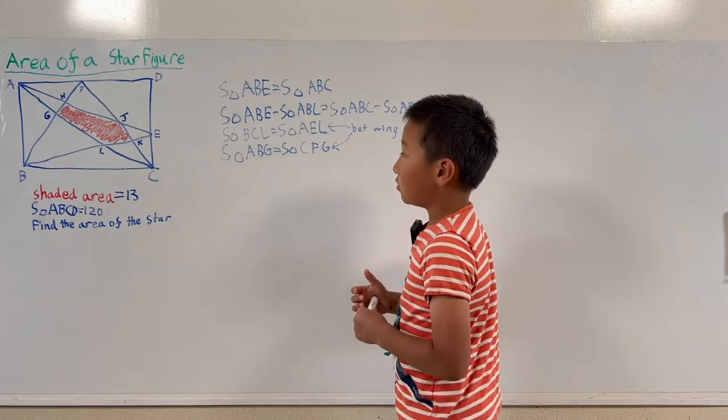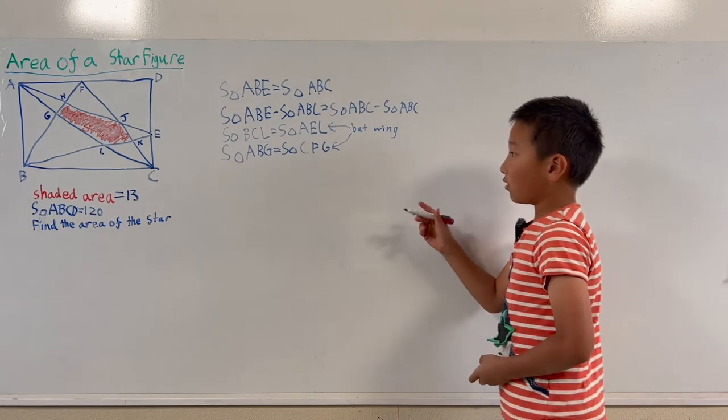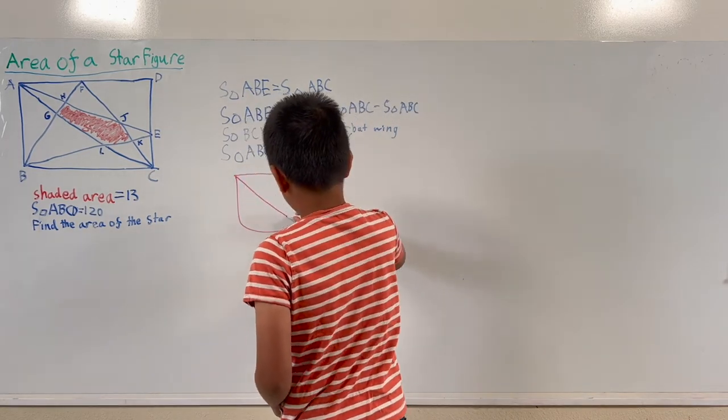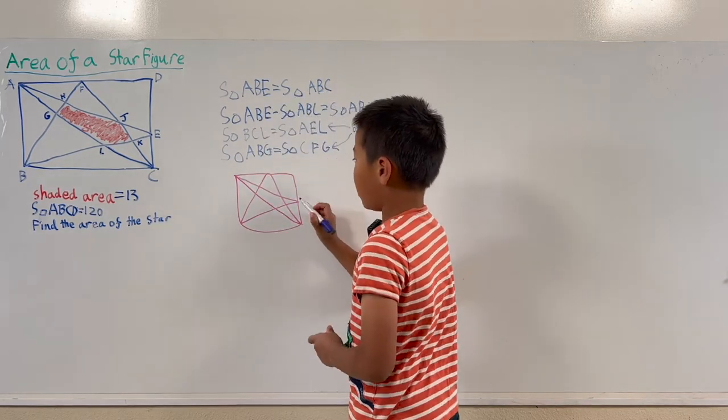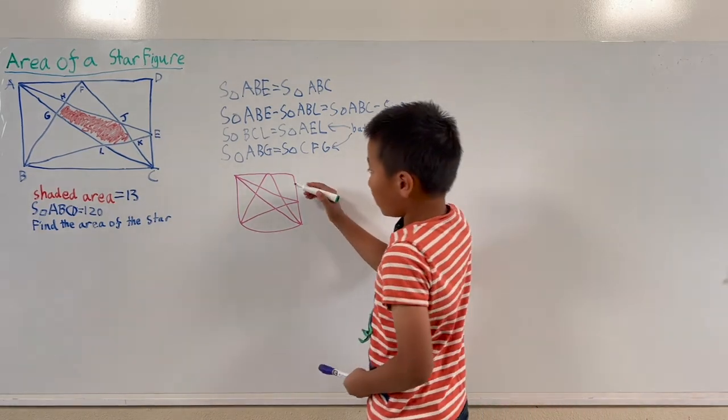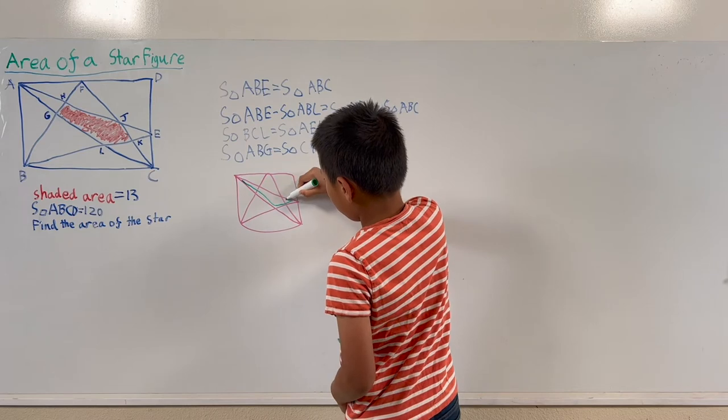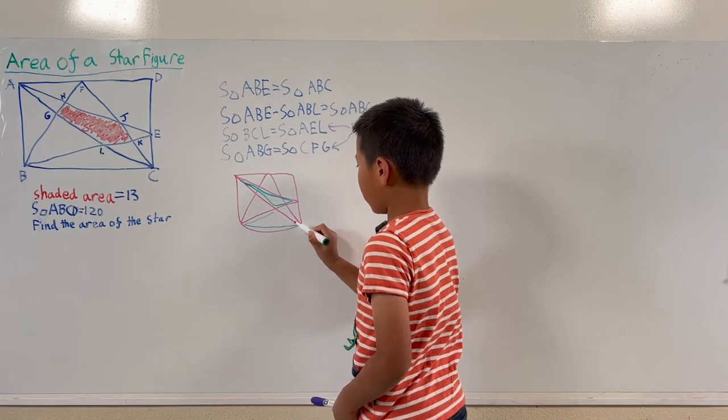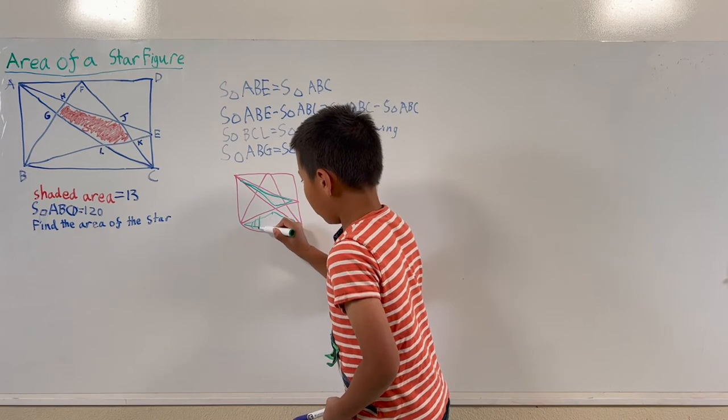So now the figure will look like this. So we have our star. We know that these parts are similar because they have the same area.